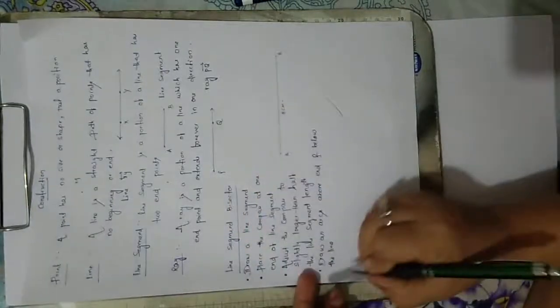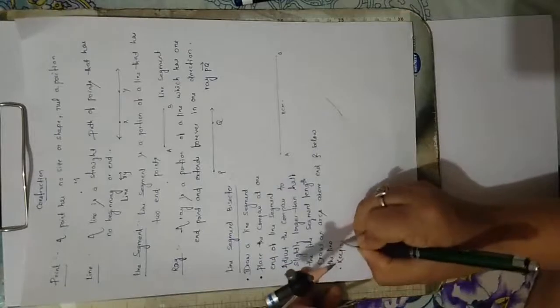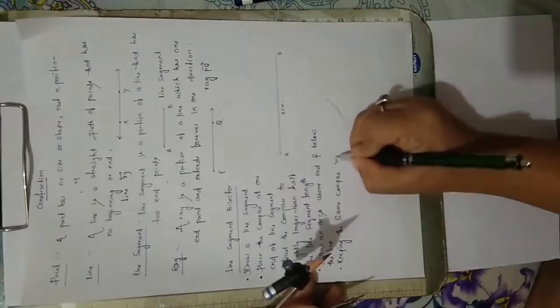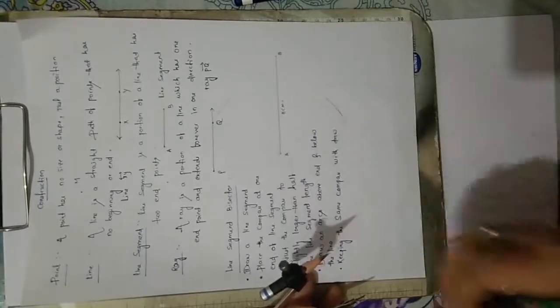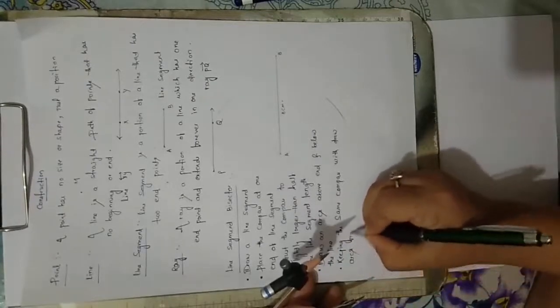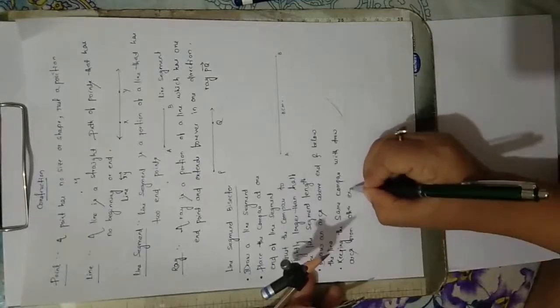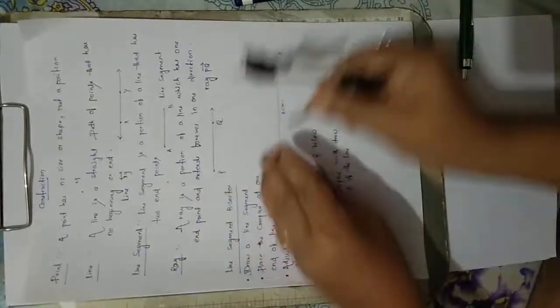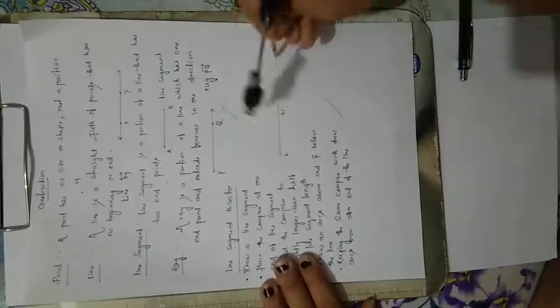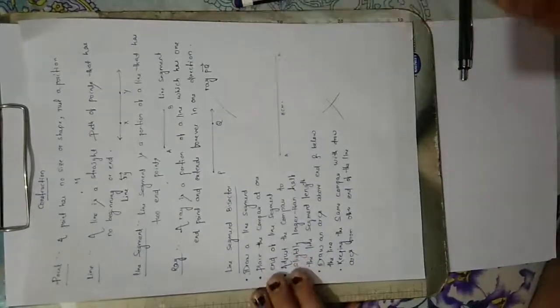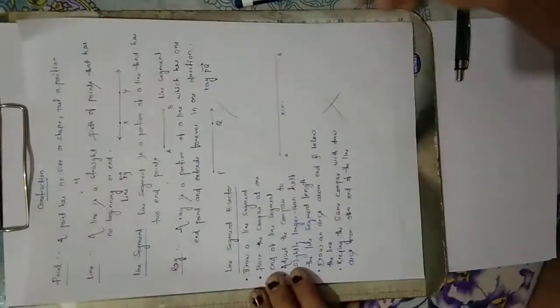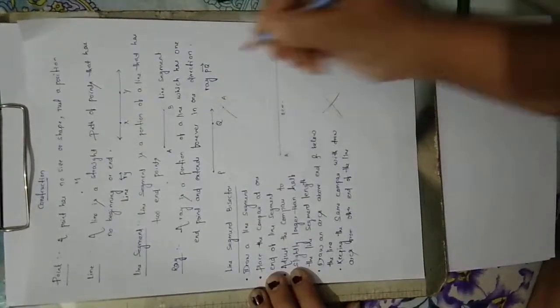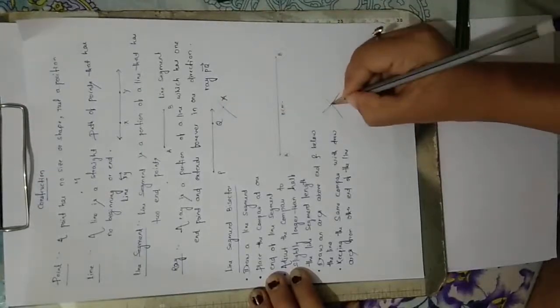Keeping the same compass width, draw arcs from the other end of the line. I will draw keeping at point A. Same thing without any disturbing, I will draw at point B also, just like this. Now, this is a point, maybe named as X, maybe named as Y.